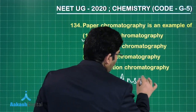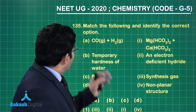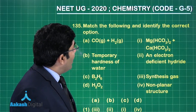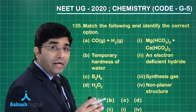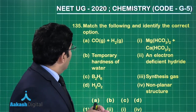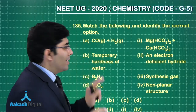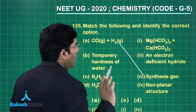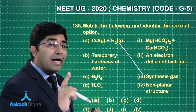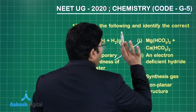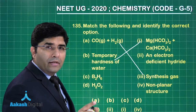The next question asks to match the following and identify the correct option. Two columns are given. CO + H2 is called synthesis gas. Temporary hardness of water is due to the bicarbonate of calcium and magnesium — so the first match is correct.